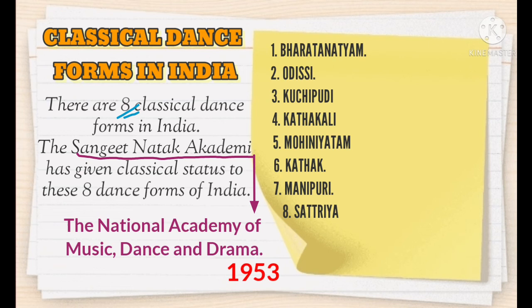The eight classical dance forms of India are: Bharatnatyam, Odissi, Kuchipudi, Kathakali, Mohiniattam, Kathak, Manipuri, and Satriya.